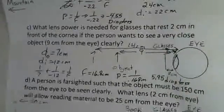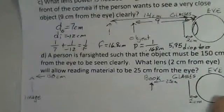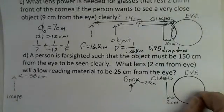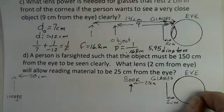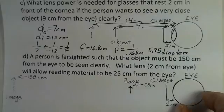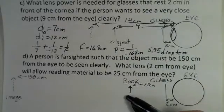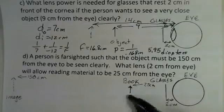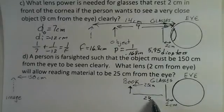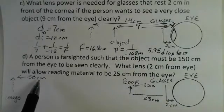Our last part here, a person. This is a different person. A person is farsighted. And the object has to be at least 150 centimeters away to be seen clearly. Again, we're going to put a lens 2 centimeters from the eye. And we want to read something 25 centimeters from the eye. So our object here, a book, 25 centimeters from the eye. Of course, that's going to be 23 centimeters as an object distance.